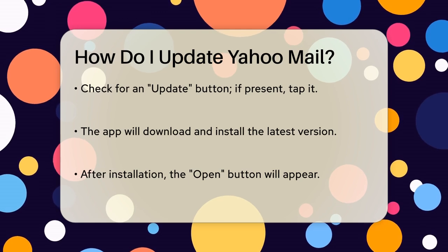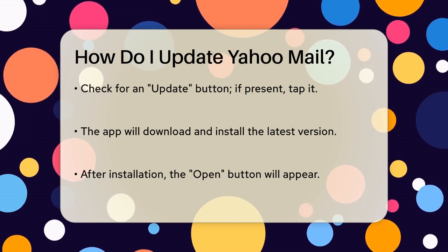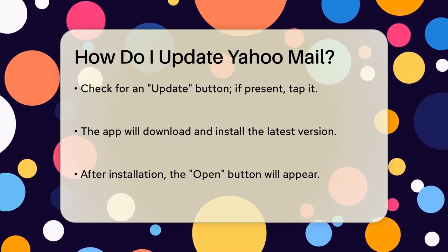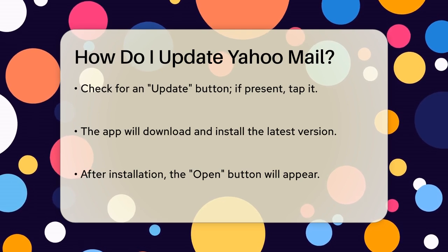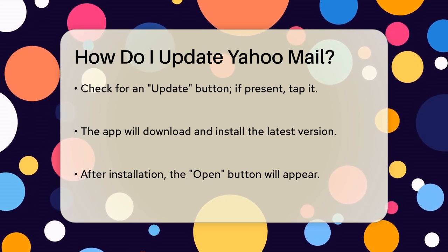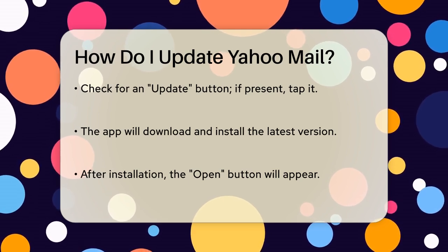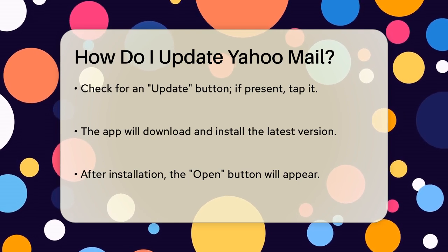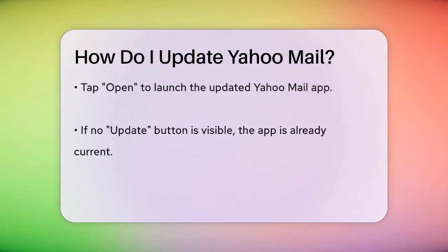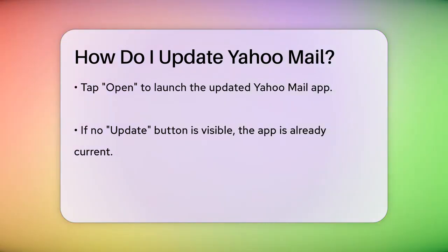Ever notice that your Yahoo Mail app isn't working as smoothly as it should? It might be time for an update. To update Yahoo Mail on your Android device, start by opening the Google Play Store. In the search bar, type Yahoo Mail and hit Search. The app will appear in the results — look for the Update button. If it's there, tap it to download and install the latest version.